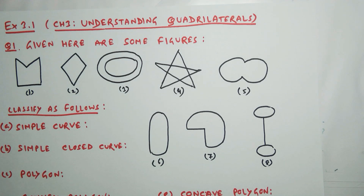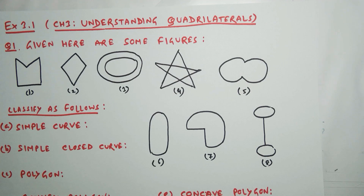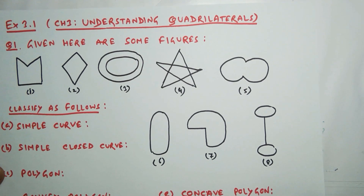This is question number one, exercise 2.1, chapter 3: Understanding Quadrilaterals. The question gives you some figures and asks you to classify them as simple curve, simple closed curve, polygons, convex polygons, and concave polygons. I have already explained all five topics in the last videos, so let us now discuss what type of curves they are.